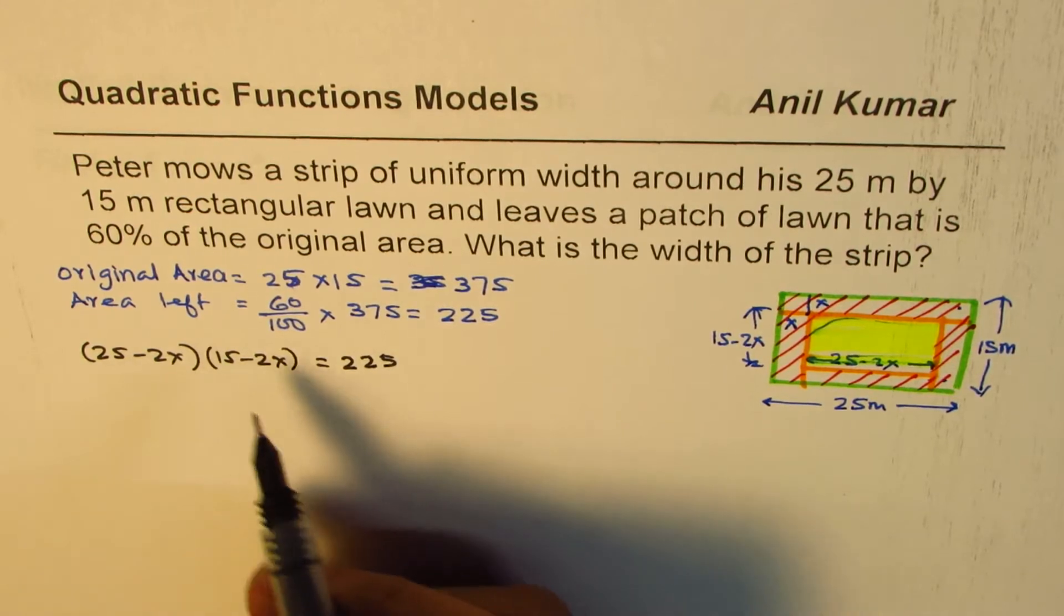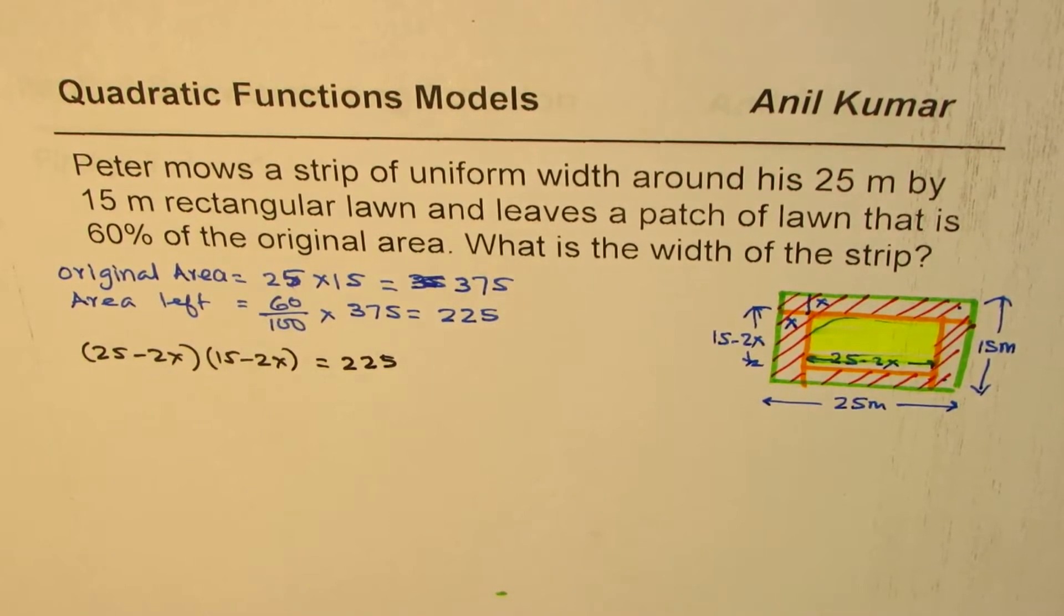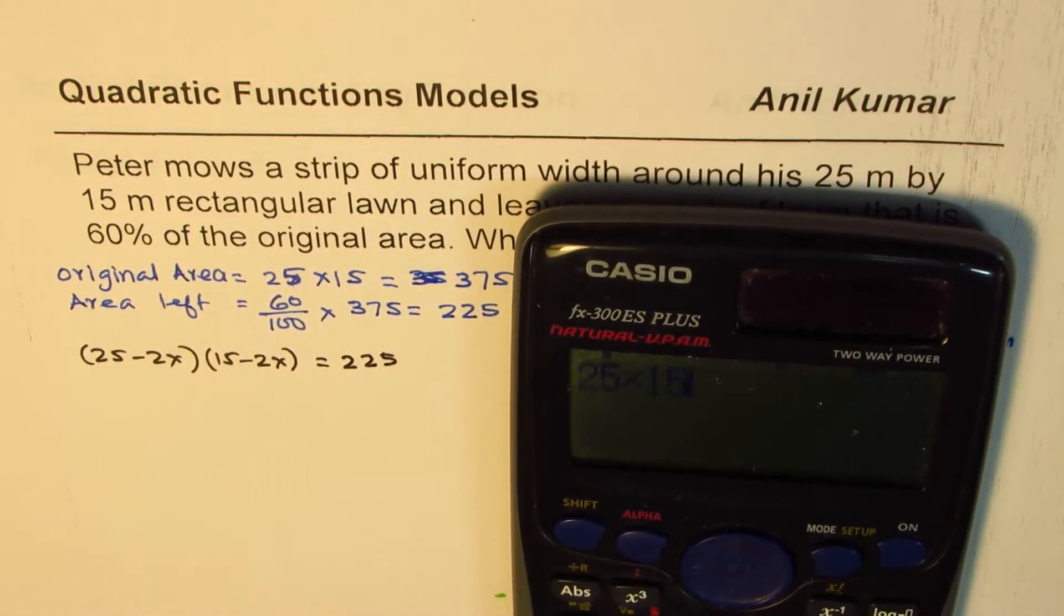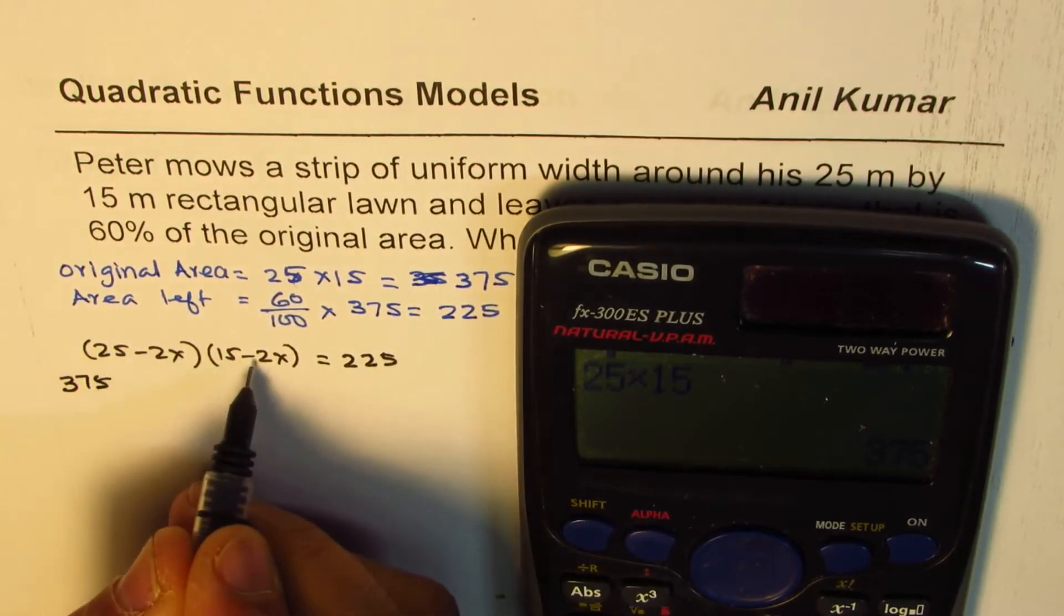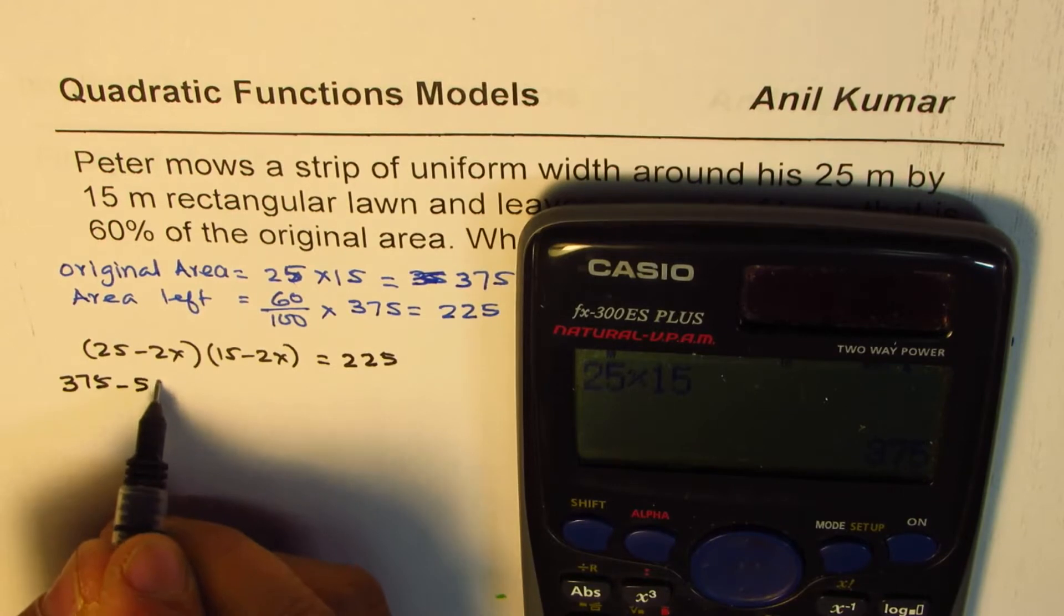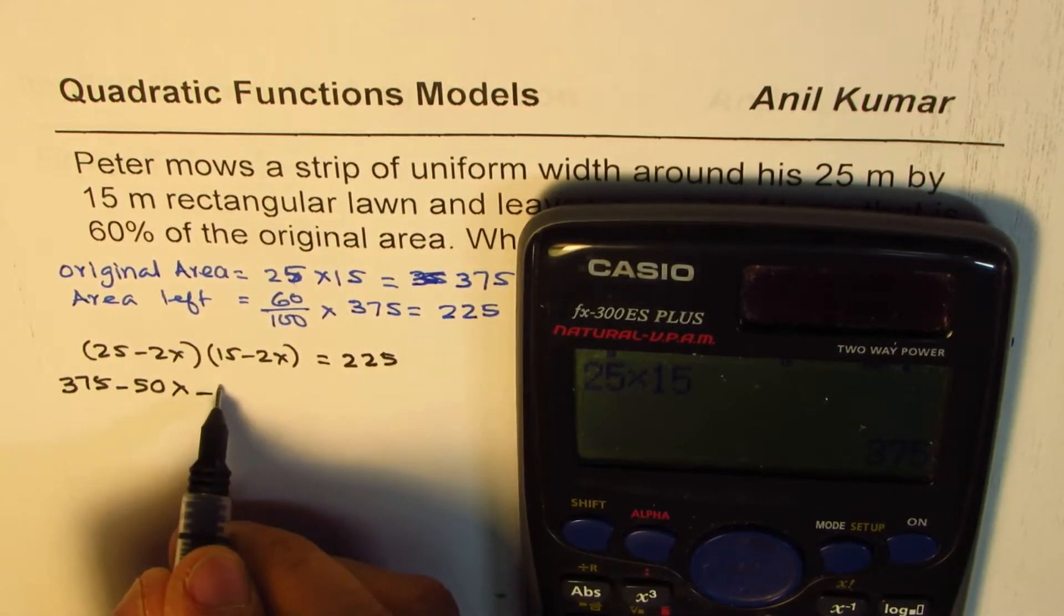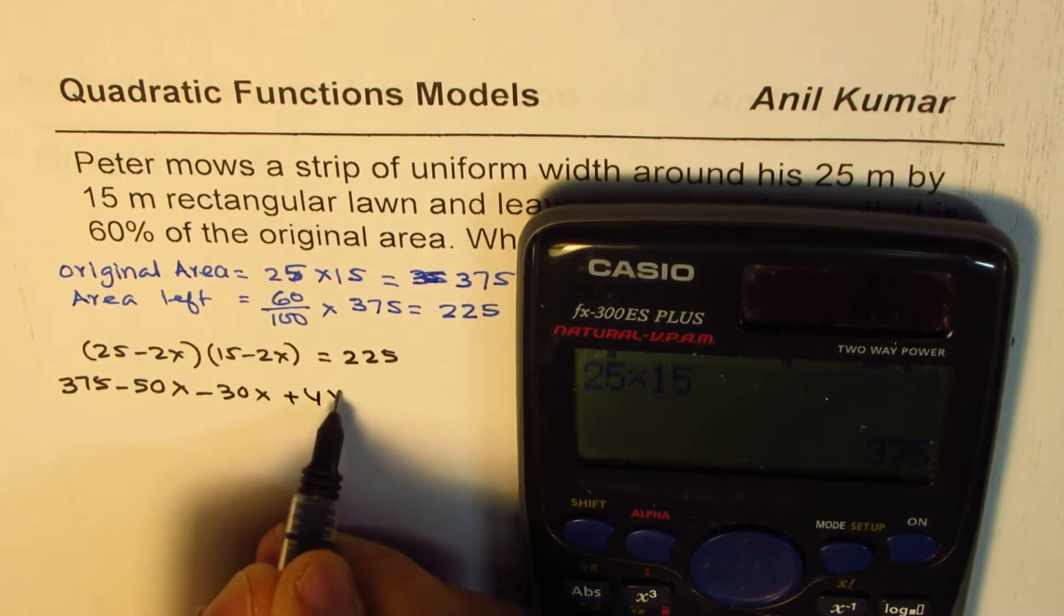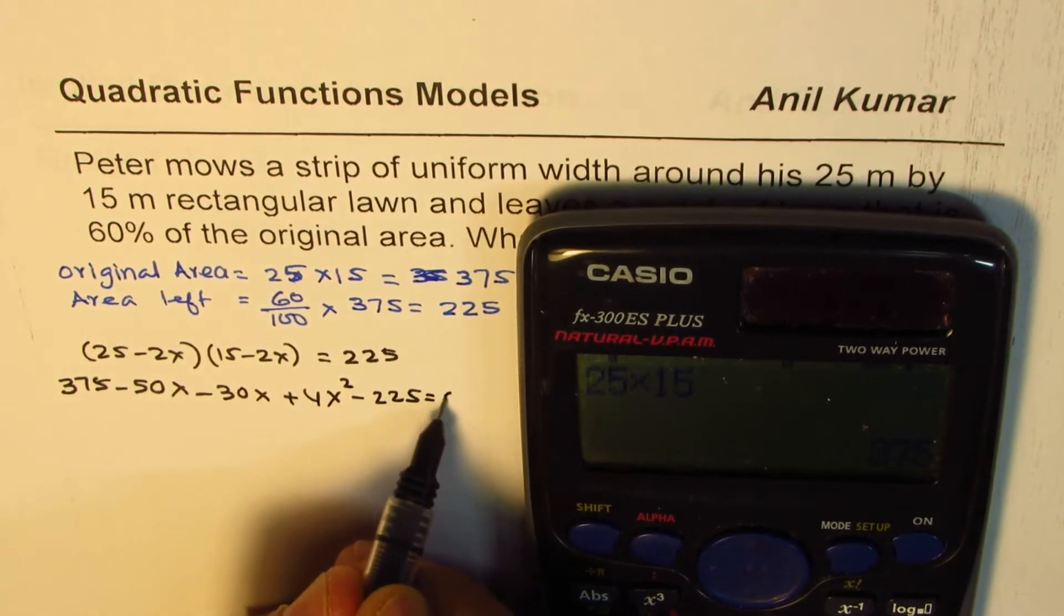Solving this we should get our answer. Let's open this bracket. 25 times 15, we already found this, is 375. Multiplying this by that gives minus 50x. Multiplying this by that gives minus 30x, and these two multiply to give plus 4x². Bringing 225 to this side: minus 225 equals zero.